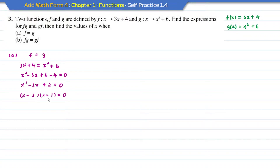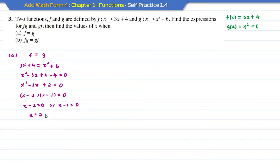After factorizing, we get x minus 2 equal to 0 or x minus 1 equal to 0. So when I solve it, x equals 2 or x equals 1. That is the solution for part a.